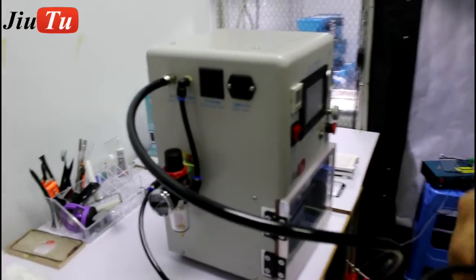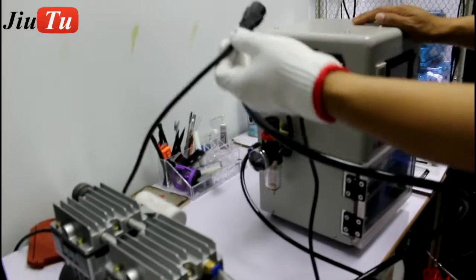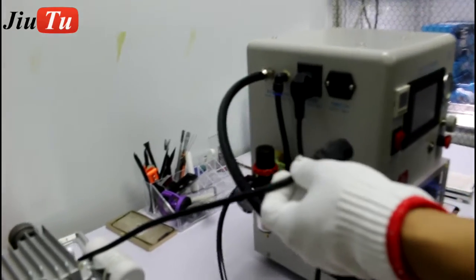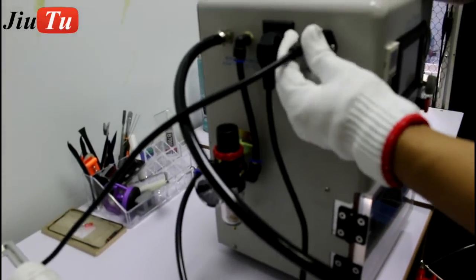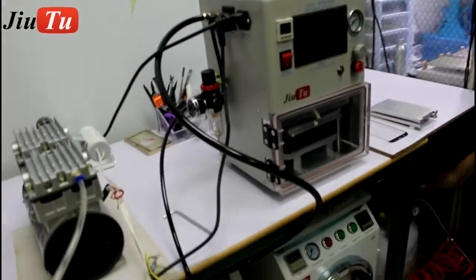And this is the power line for the vacuum pump. So the machine itself can control for this vacuum pump. And this is the power for the OCA vacuum laminated machine. So the installation is finished.